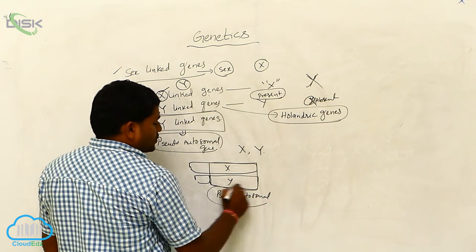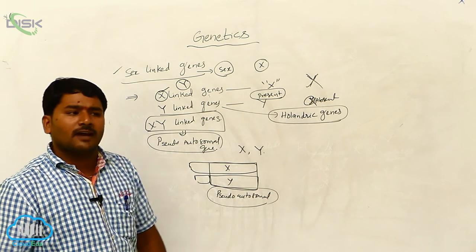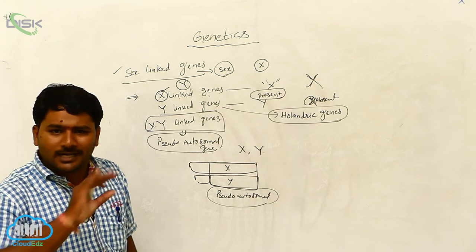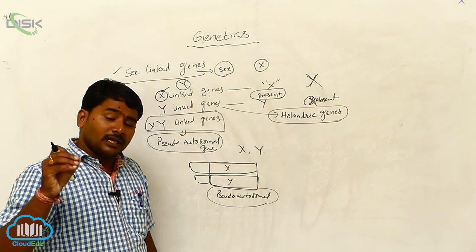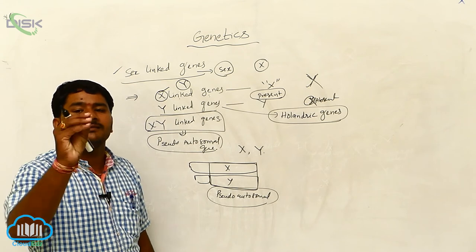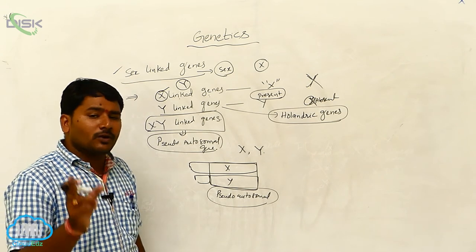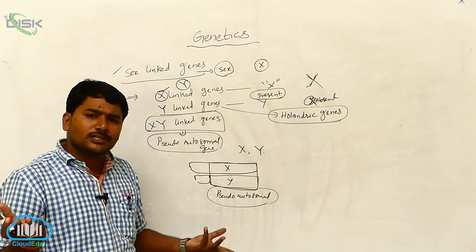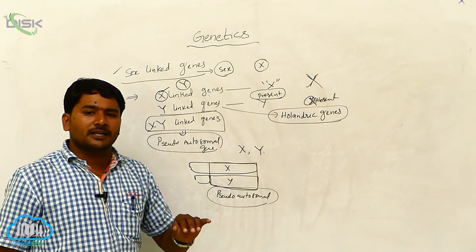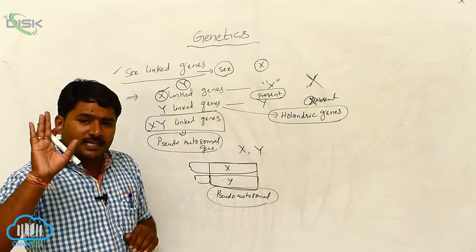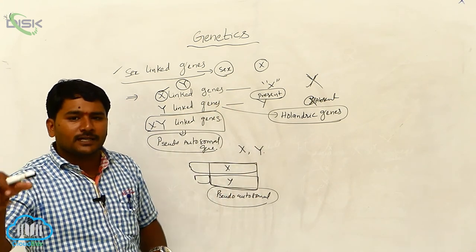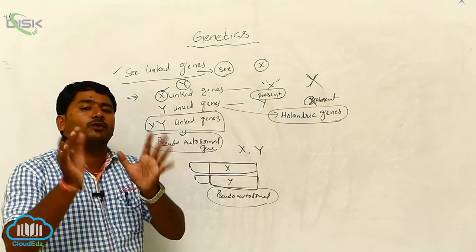Why are we calling it the pseudo-autosomal region? Autosomes have the same number of chromosomes in male and female — autosomes are not different, they are the same. 22 pairs of chromosomes or autosomes are present in human beings, and they are the same. The difference occurs only in the sex chromosomes. Genes are different on the X chromosome and genes are different on the Y chromosome. The genes present on the X chromosome are absent on the Y, and genes present on the Y are absent on the X. Only a few genes are present on both sex chromosomes.